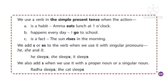Let us read the textbook. We use a verb in the simple present tense when: the first rule — the action is a habit. For example: Amma eats lunch at 1 o'clock — it's a habitual action. The second rule — the action happens every day. For example: I go to school.